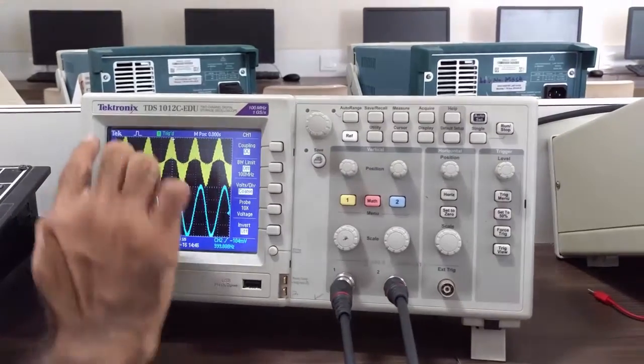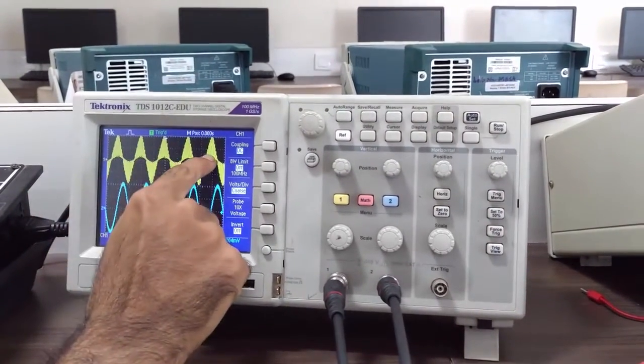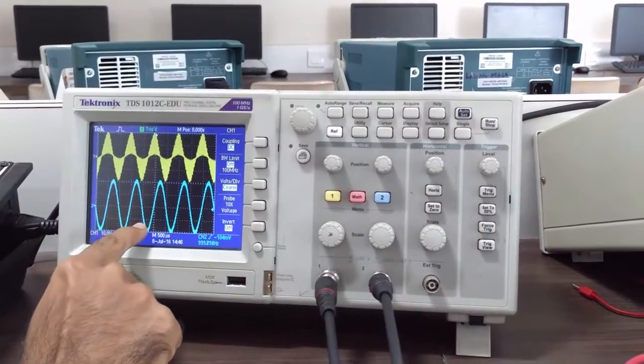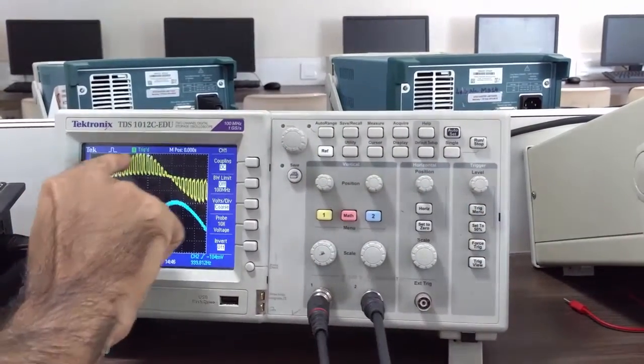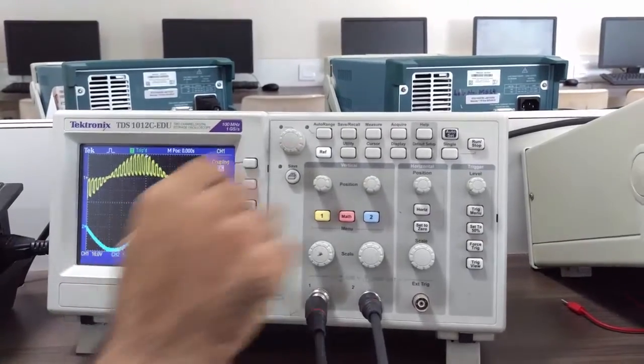Now you can see that this is the sampled version on channel 1 and we are getting the demodulated output on channel 2. If you just scale it up, you can see this is the sampled version and this is the demodulated version.